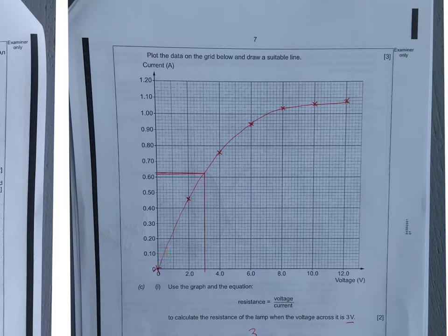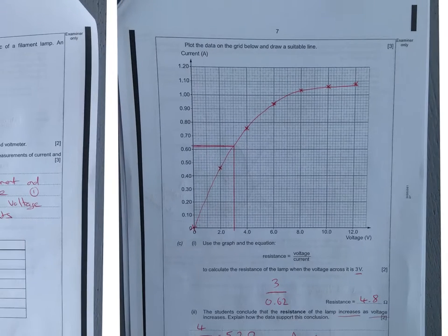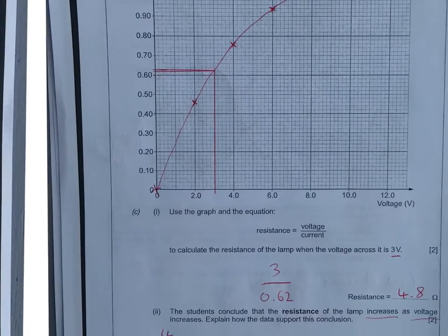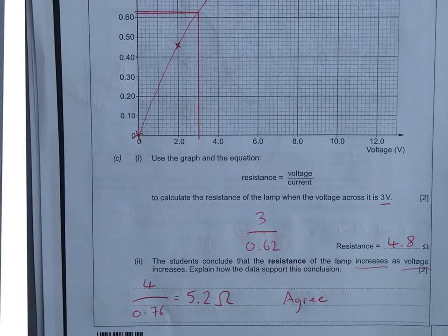You're going to graph that then for three marks. Two marks for your plotting, one mark for the nice curve. Remember to do this in pencil just in case you get it wrong. Calculate the resistance using this equation, voltage over current.